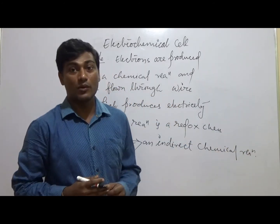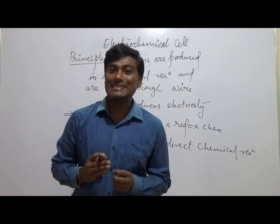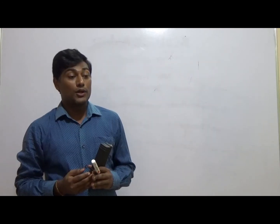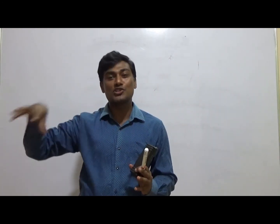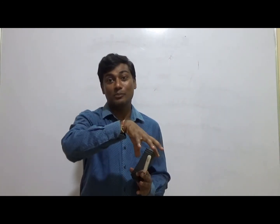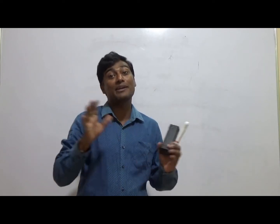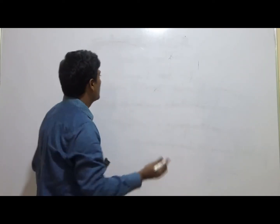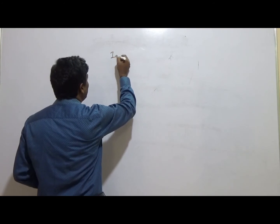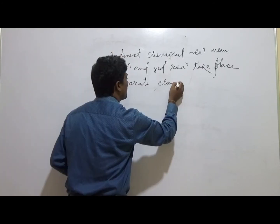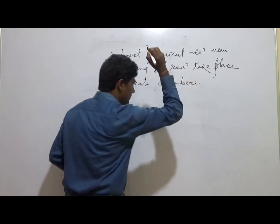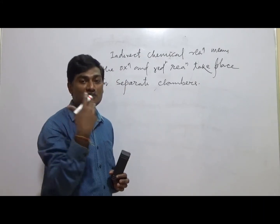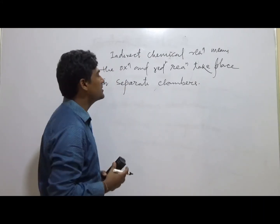What is an indirect chemical reaction? It means the oxidation and reduction reactions both take place in separate chambers, not in a single chamber. That is what we call an indirect chemical reaction.